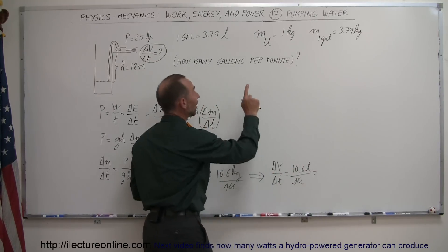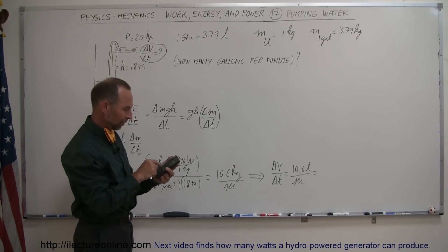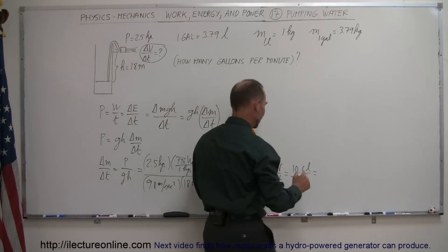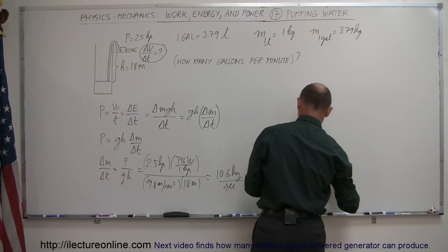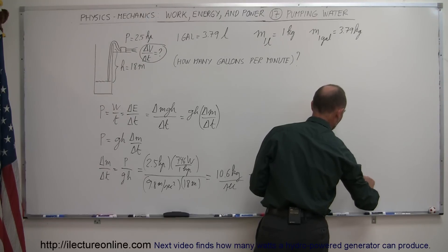And of course, if we then divide that by 3.79, we can then calculate the number of gallons. And so we have about 2.79 gallons per minute.